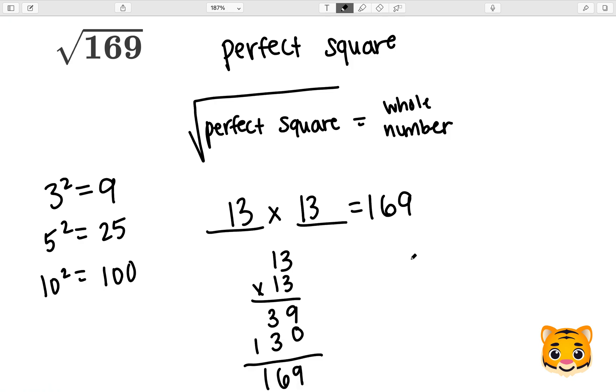We can now see that 13 times 13 is 169. Therefore, 13 squared is 169. And finally, we can rewrite the square root of 169 as just 13. We don't need any further simplification or approximation, as the square root of 169 is exactly 13.